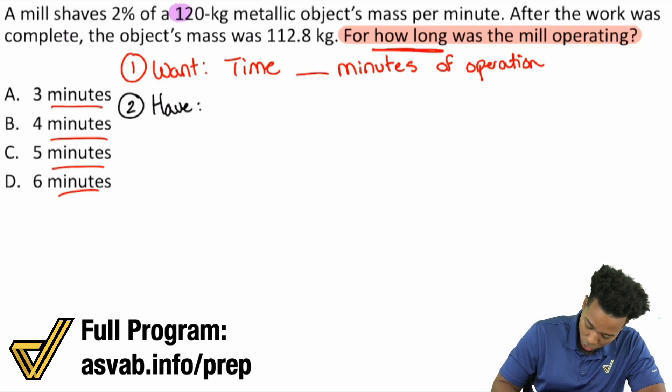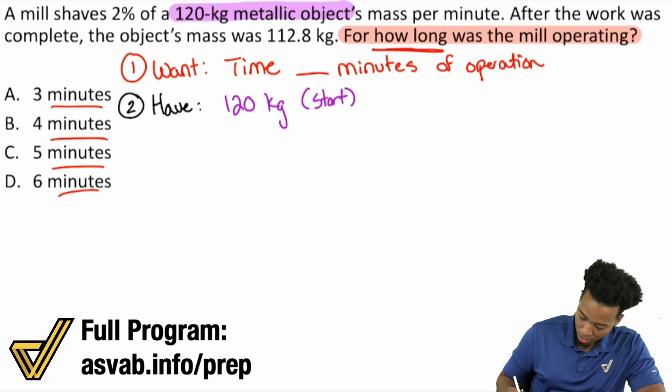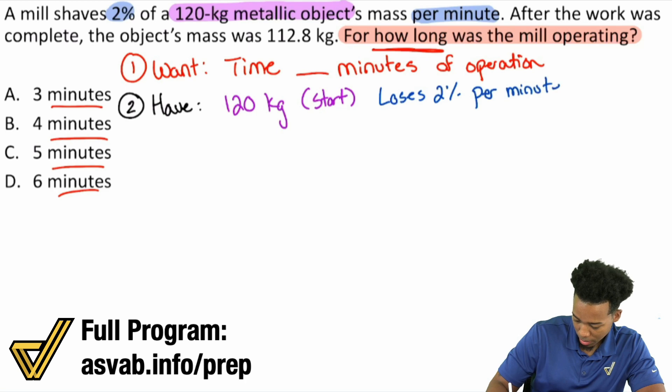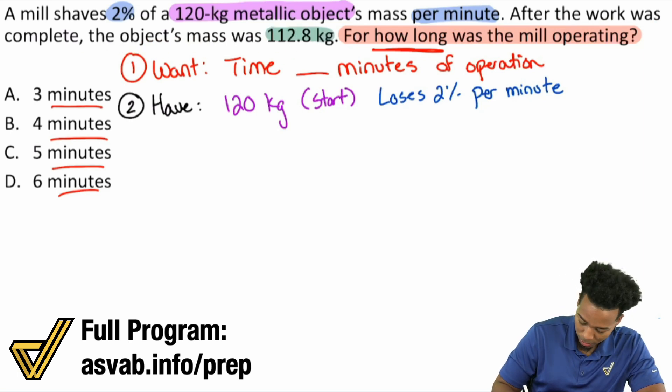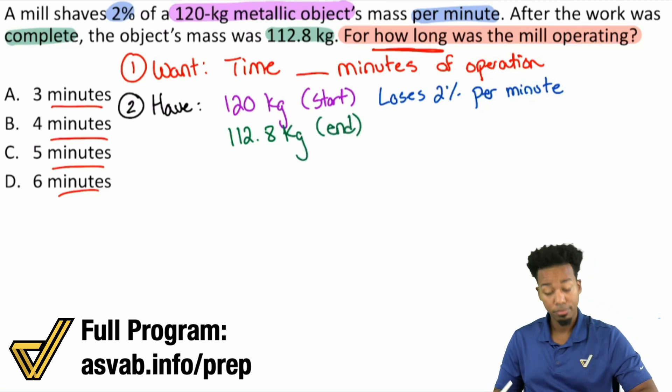We see here this mill shaves 2% of a 120 kilogram metallic object's mass per minute. After the work was complete, the object's mass was 112.8 kilograms. For how long was the mill operating? Sounds good. I see here again, we have 120 kilogram metallic object. So okay, we have 120 kilograms at the start. And then we also see that it's shaving 2% of the mass per minute. So 2% per minute. So right over here loses 2% per minute. And then at the end of it, it says after the work was complete, the object's mass was 112.8 kilograms. So again, I'm just writing this down. So at the end when it's complete, the end is 112.8 kilograms. Okay, and there it is. Sounds good.